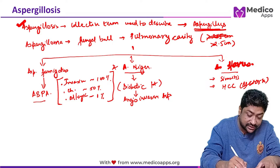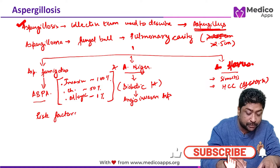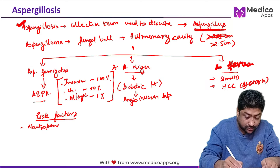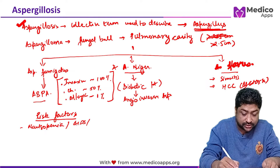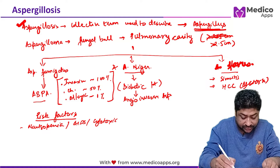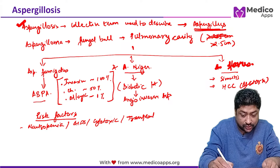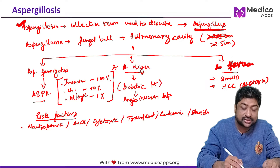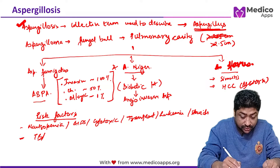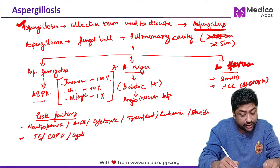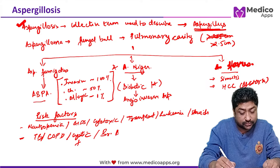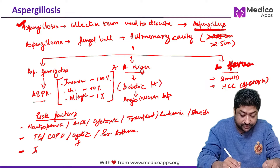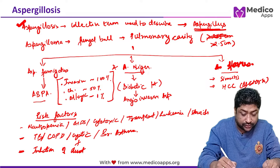The risk factors are very frequently asked. The first and most important is any immunocompromised state — neutropenia, AIDS, cytotoxic drugs, transplant patients, leukemia patients, and patients on steroids. The second group includes specific diseases like tuberculosis, COPD, cystic fibrosis, and bronchial asthma, all of which predispose to aspergillosis.